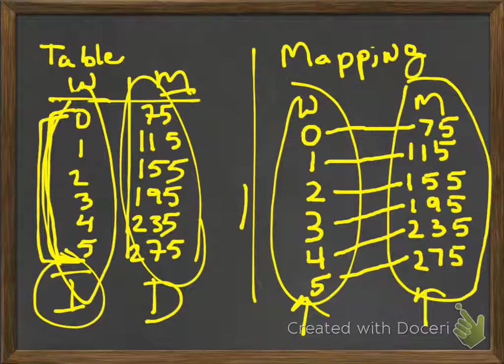What's the domain? The domain is 0, 1, 2, 3, 4, and 5. So you have to list all those numbers like that. Your range is 75, 115, 155, 195, 235, and 275. So the range is all those numbers that are on the right-hand side.